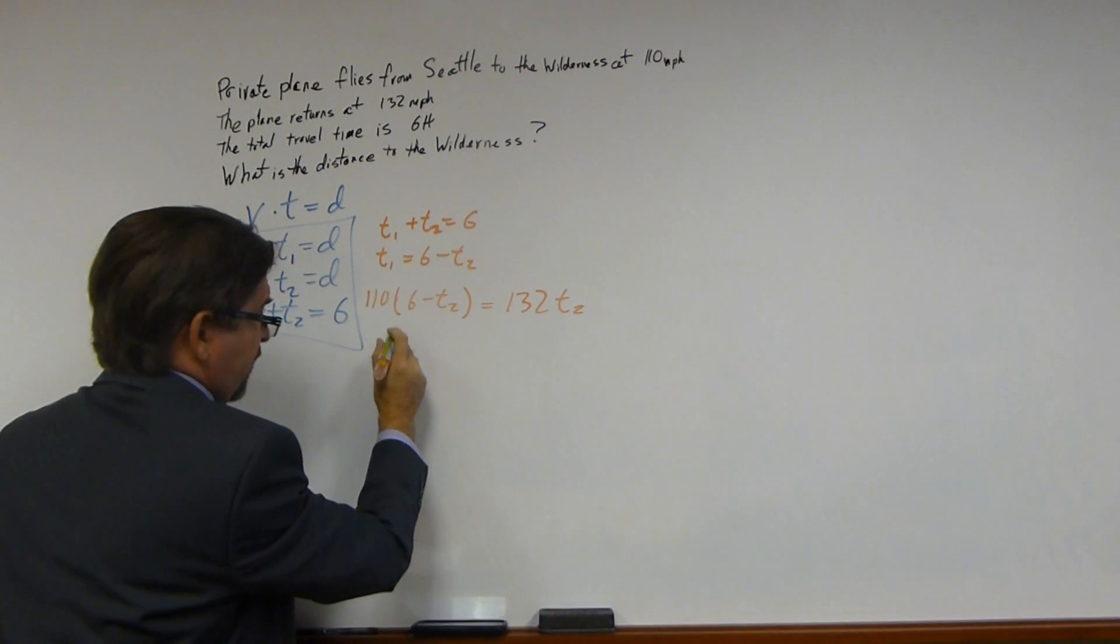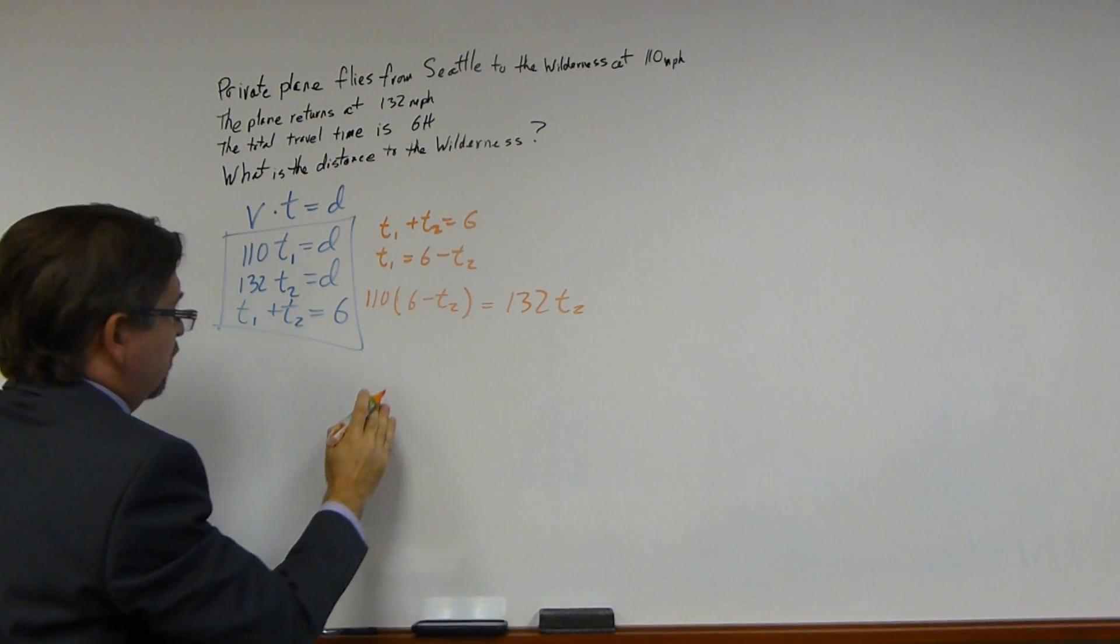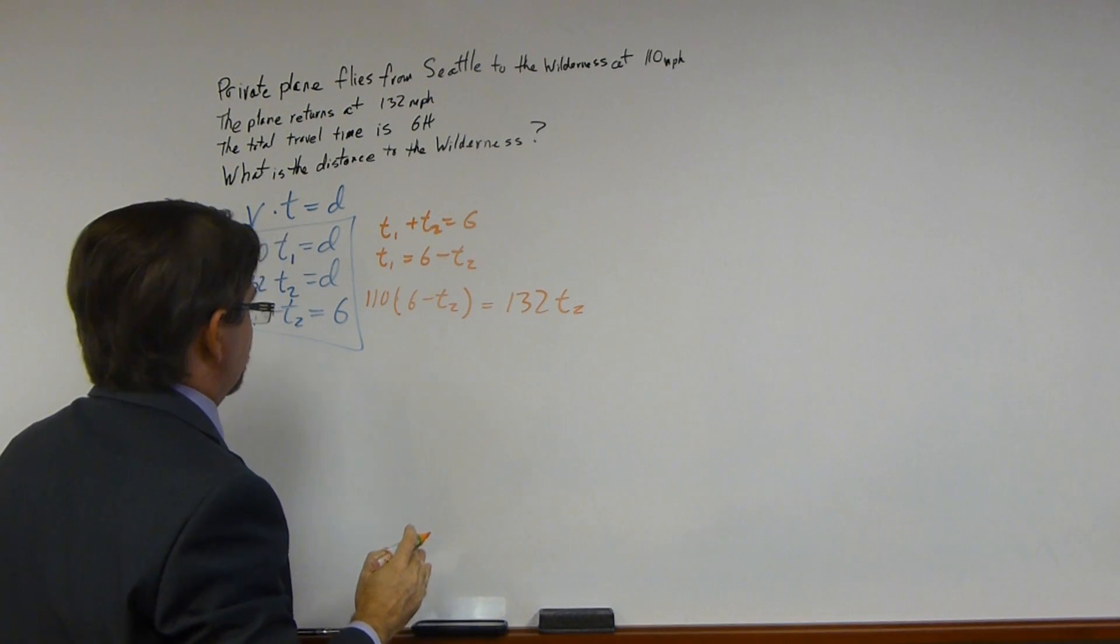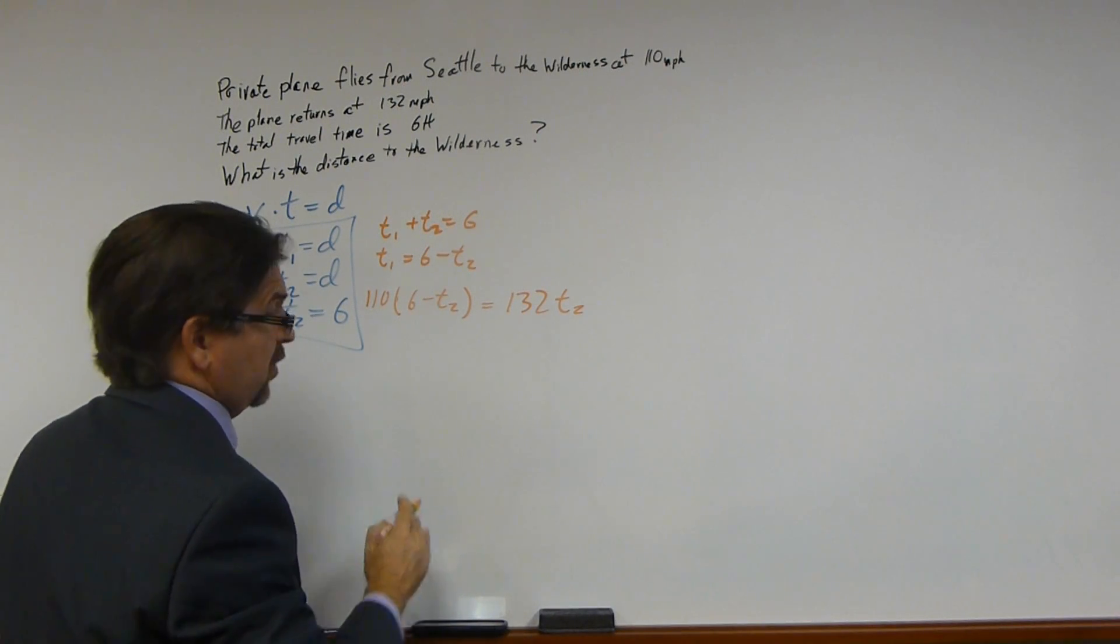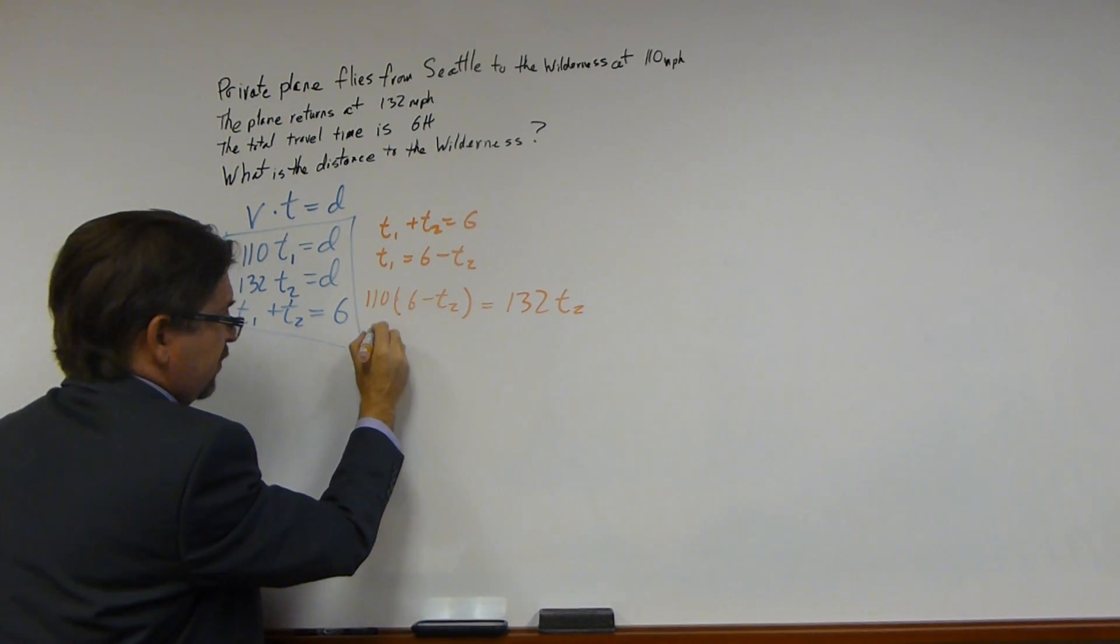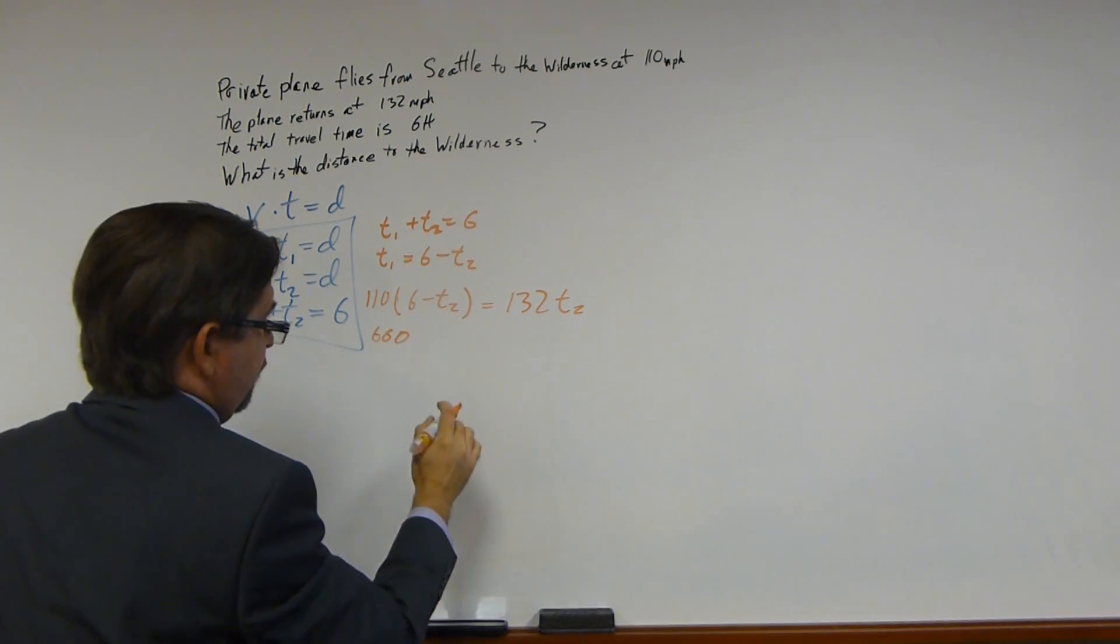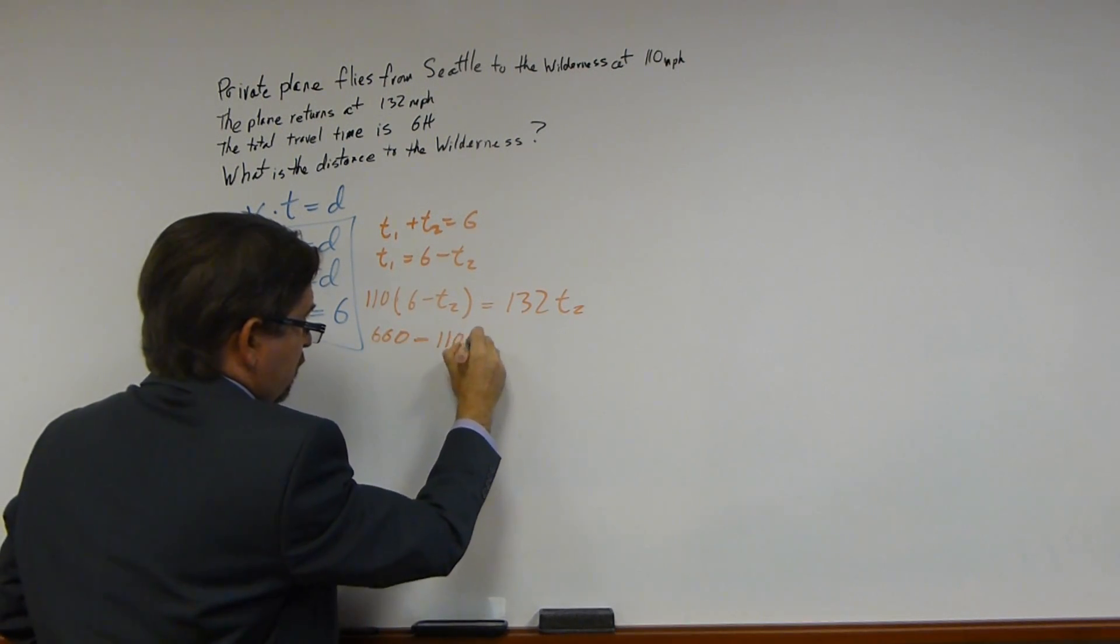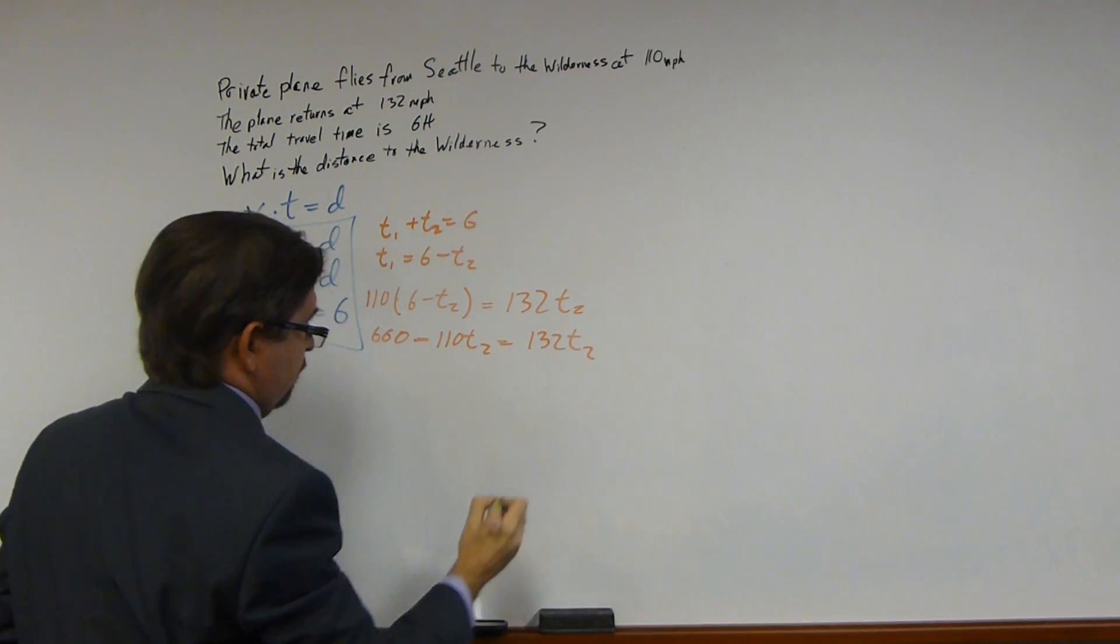Let's solve this. If we can solve for T2, then we can get T1. Once we've got T1, we can solve for distance. Actually, once we get T2, we can solve for distance currently. That's enough information. We're almost done here. So 110 times 6, 660. 110 times negative T2, we get minus 110 T2 equals 132 T2.